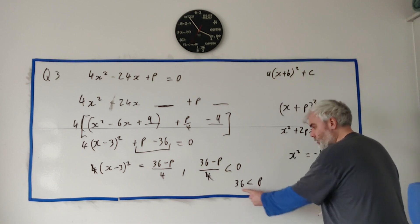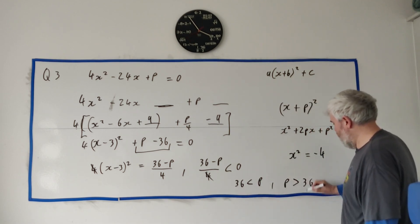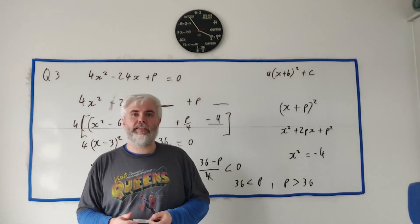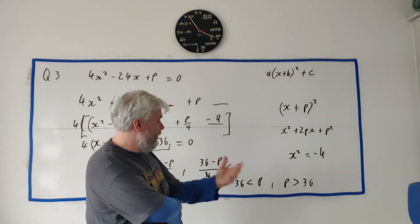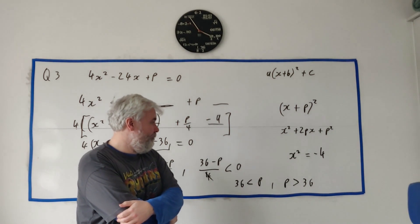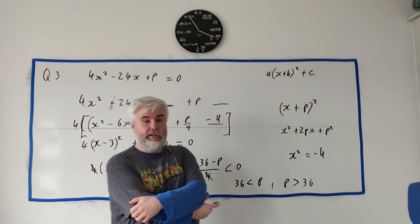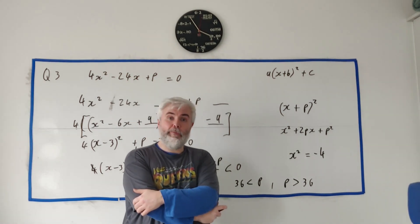Let me write that way. p is bigger than 36. And that's the answer to that question. Hence or otherwise, find a set of values for p. So the set of values is p is bigger than 36. So any number bigger than 36. OK, I hope that answered that question. If you have any follow-on, put them in the comments below. I'll do my best to answer.